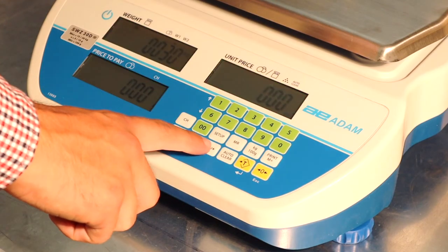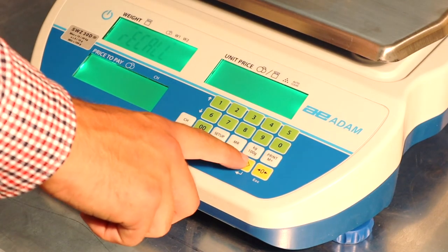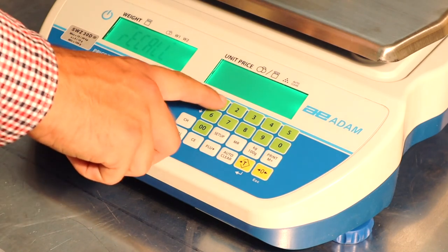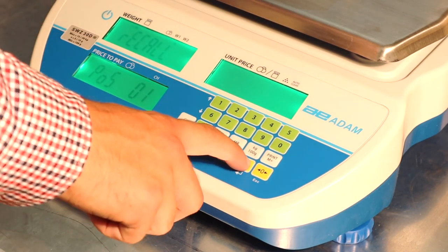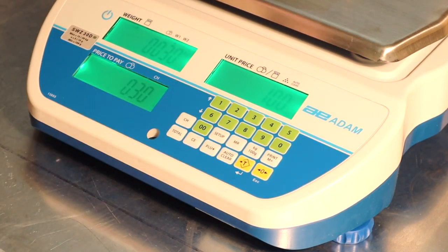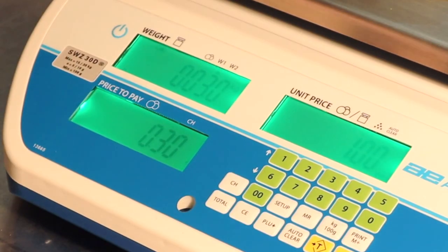You can recall a PLU by pressing the PLU button, pressing tare, and then selecting the position of the item. In this case, 1. Press tare to confirm, and the scale will show your price per kilo or 100g.